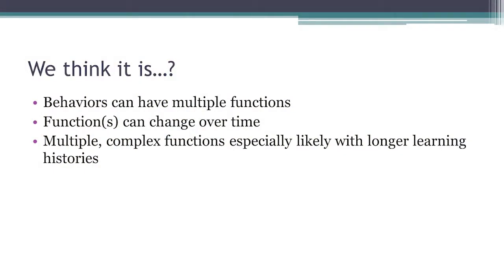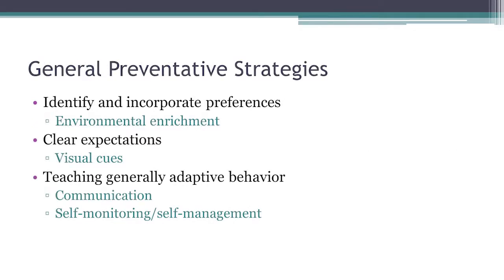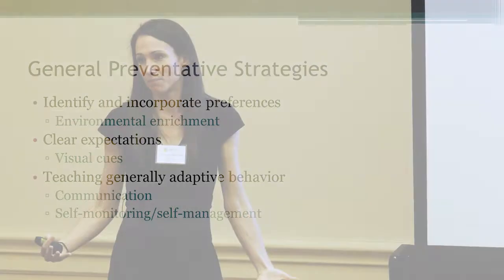The truth is, especially with older individuals, these functions can interact over time and even change. So an FBA done a year ago might not be valid anymore, especially if you used one of the less valid measures to start. These things vary — they change over time. But in general, providing clear expectations up front can be extremely helpful, because that minimizes the need to engage in problem behavior to get out of bad situations — you know what to expect, and it decreases the aversiveness. Communication is a behavior that generalizes and grows over time, so it's the most preventative thing you can give a child — helping them communicate.